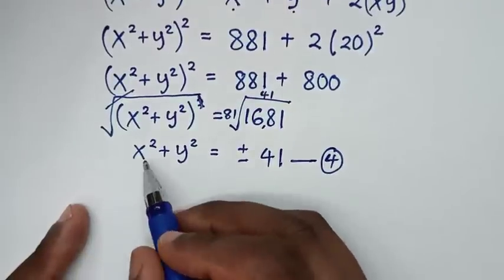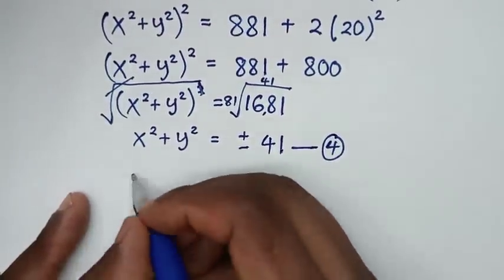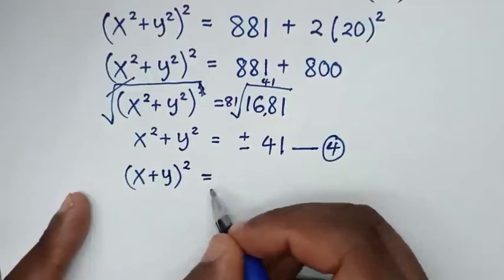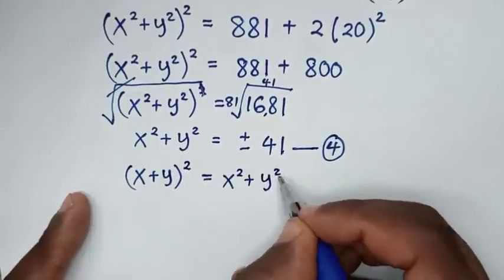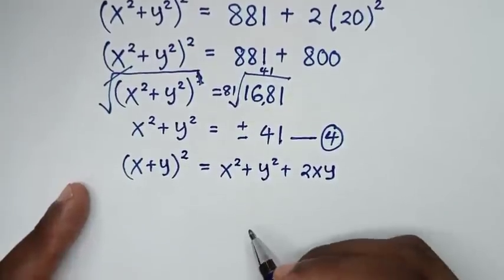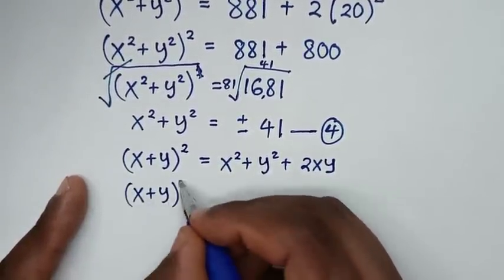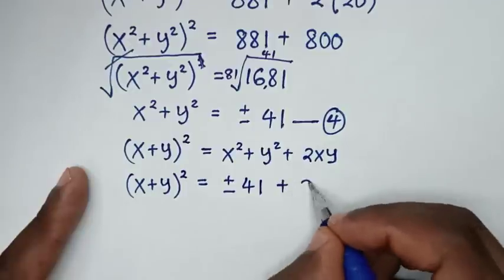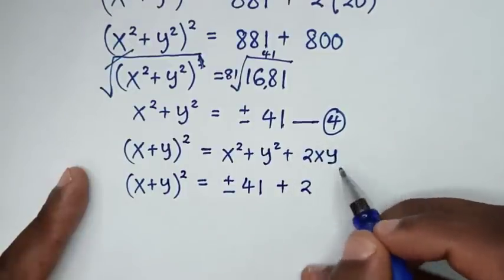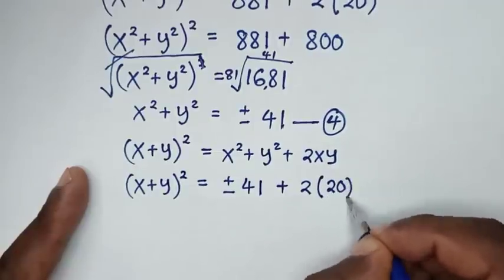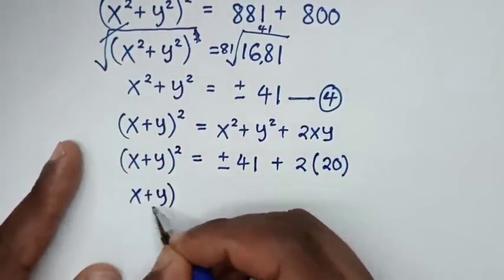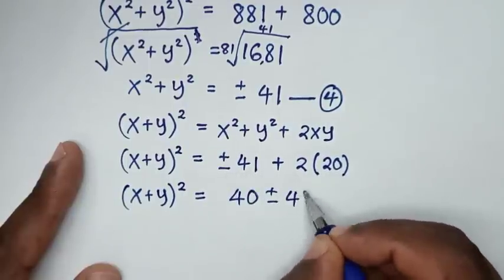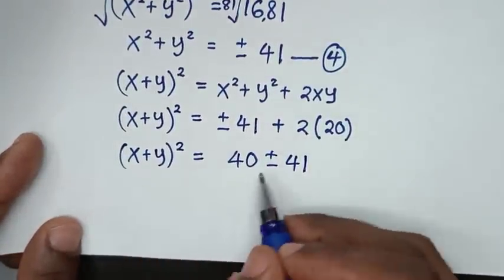In the next step, to get x plus y, we'll apply the rule: x plus y bracket squared. The expansion is equal to x squared plus y squared plus 2xy. So x plus y bracket squared is equal to x squared plus y squared, which is plus or minus 41, then plus 2xy. xy is from equation 2 which is 20, so it will be plus 2 times 20, which is 40. So x plus y bracket squared is equal to plus or minus 41 plus 40.